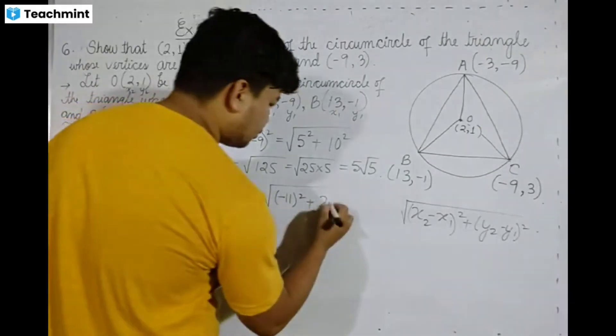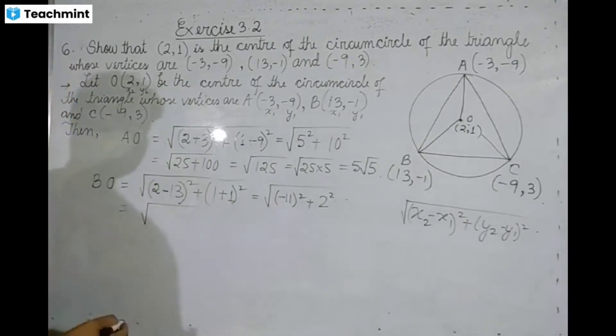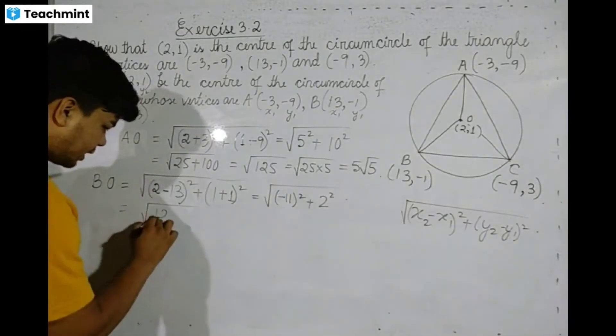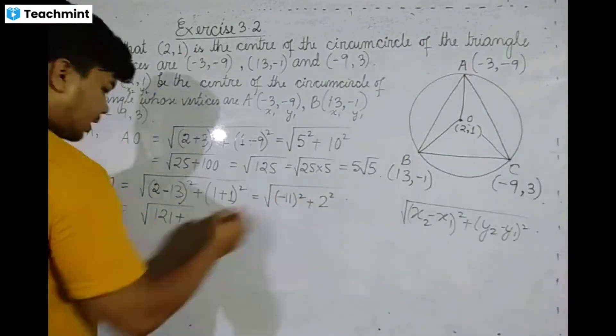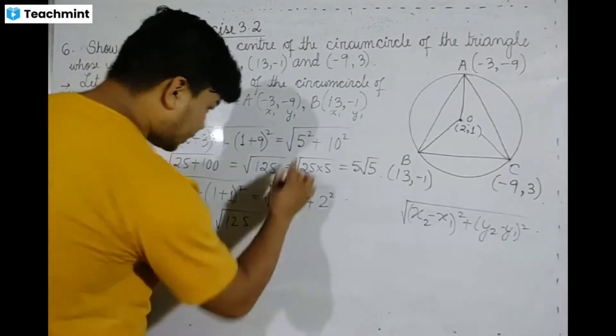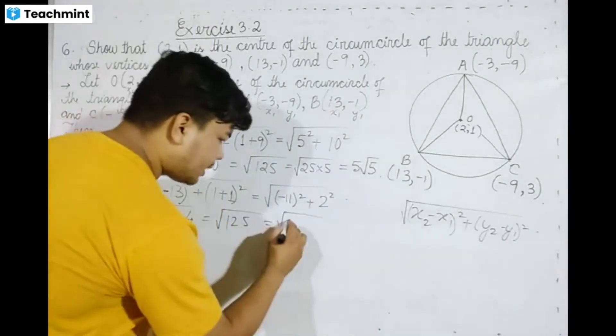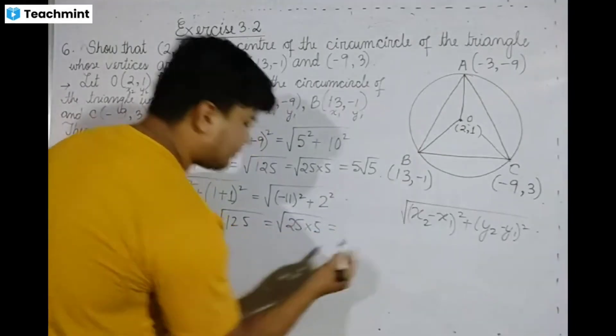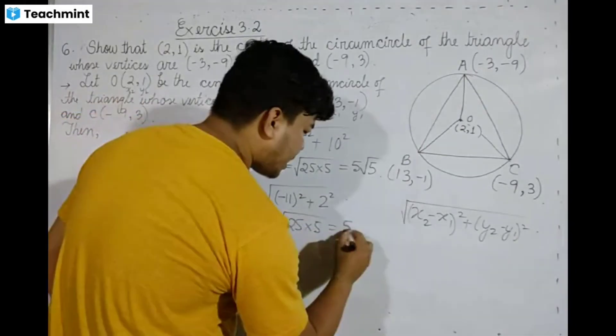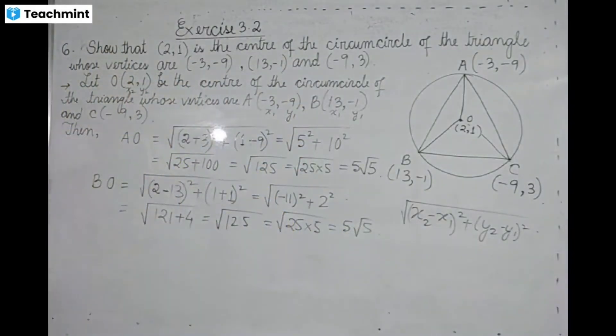This equals √[121 + 4] = √125, which again equals 5√5. So BO also equals 5√5.